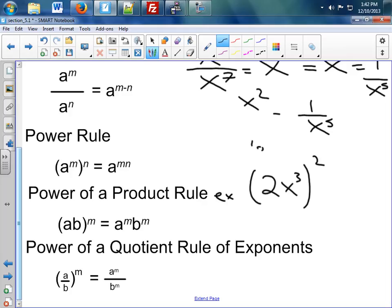The Power of the Product Rule means you have to send this 2 to everything. So, 2 times 1 is 2. 2 times 3 is 6. And what is 2 squared? 4. Remember, you have to send the power to everything in the parentheses.